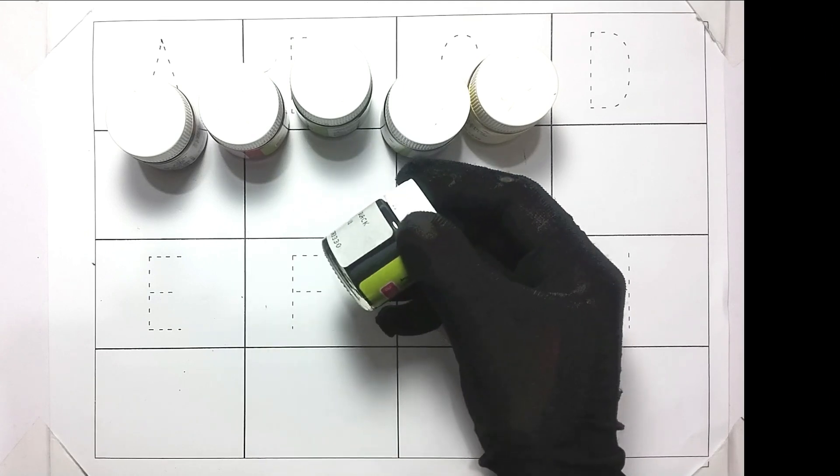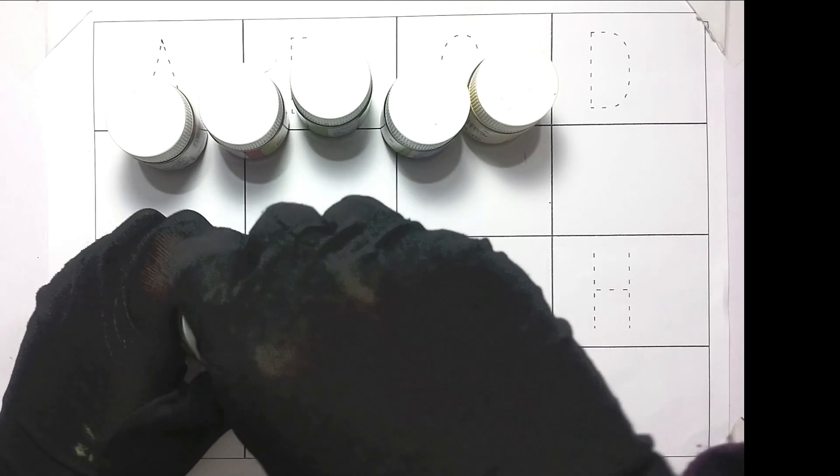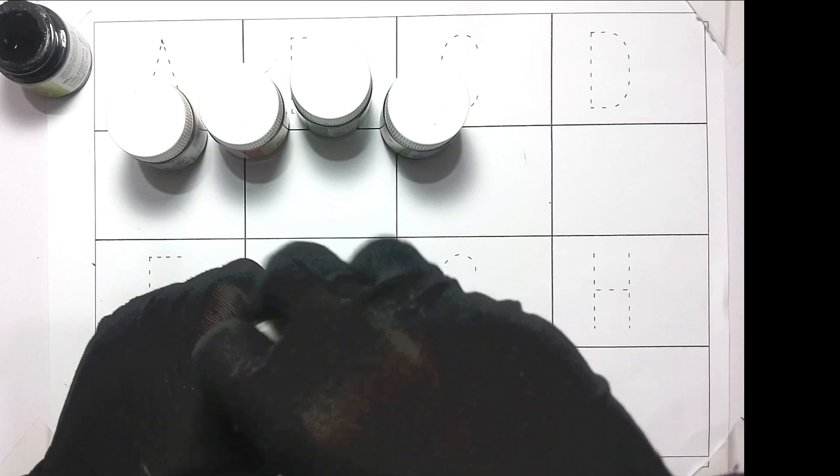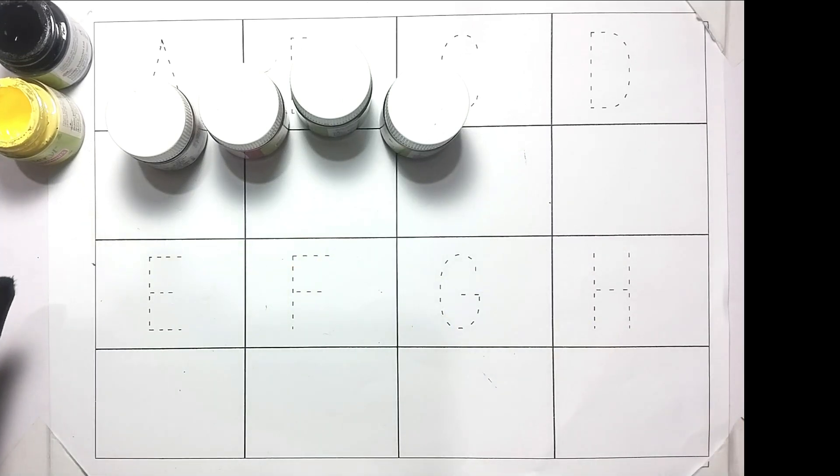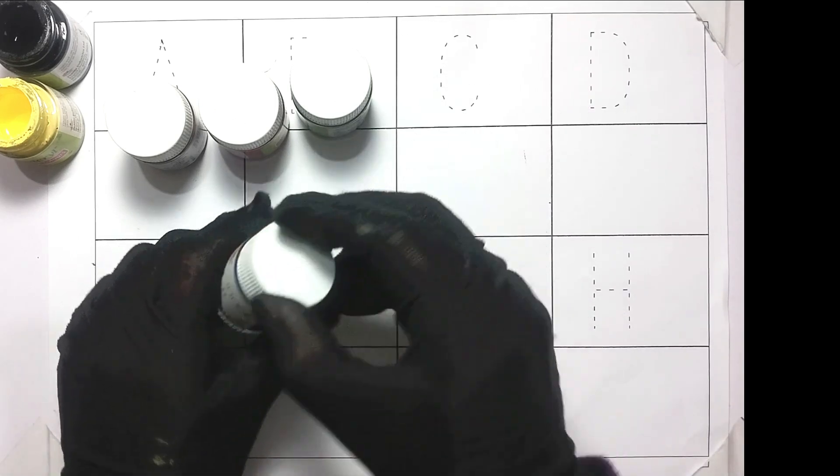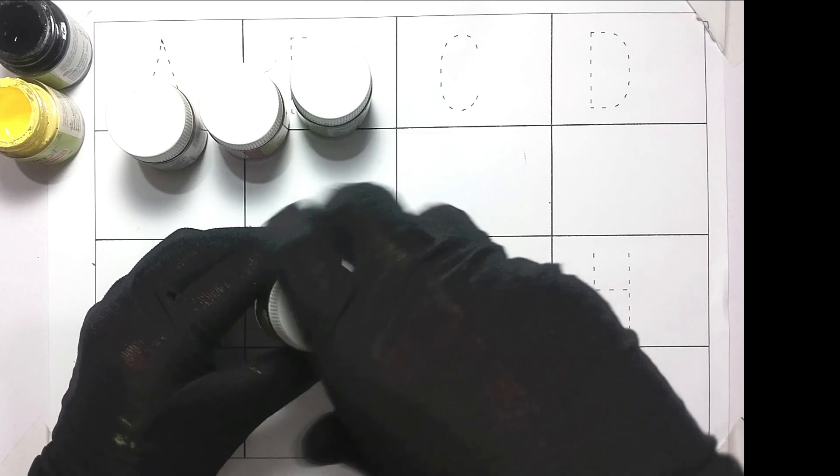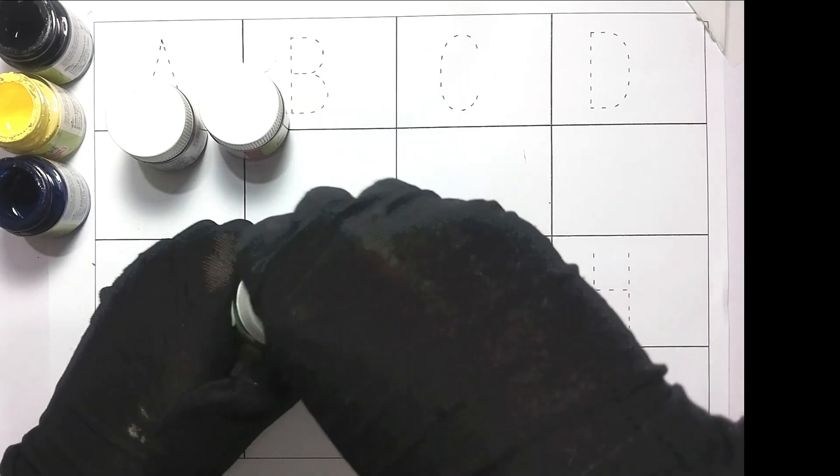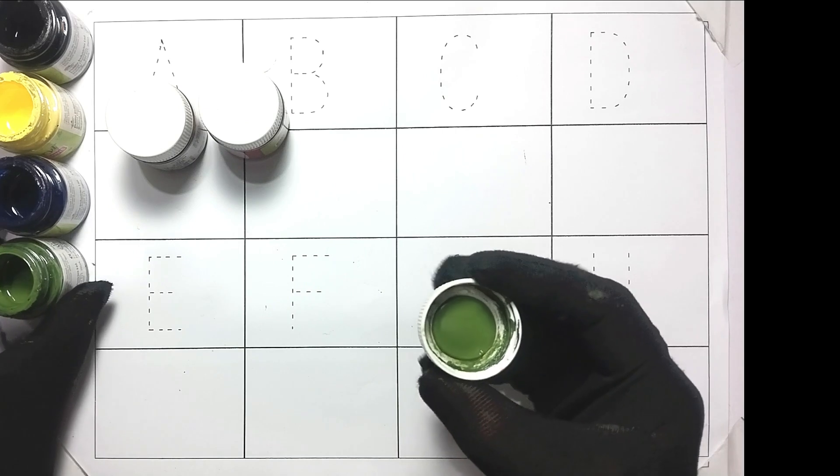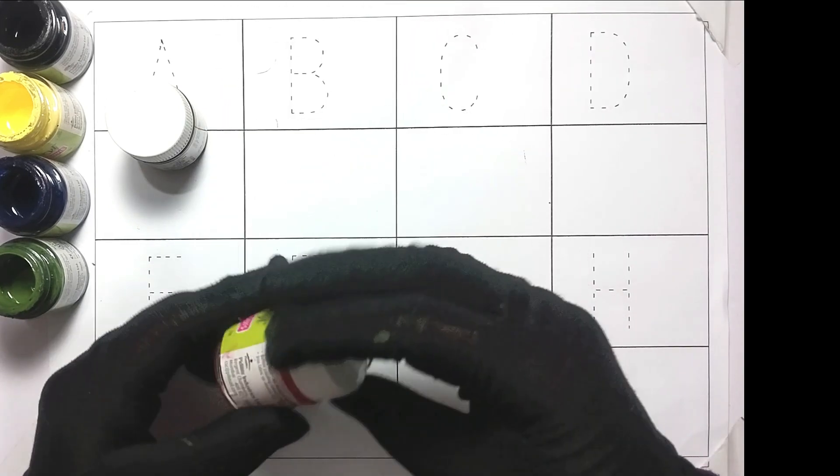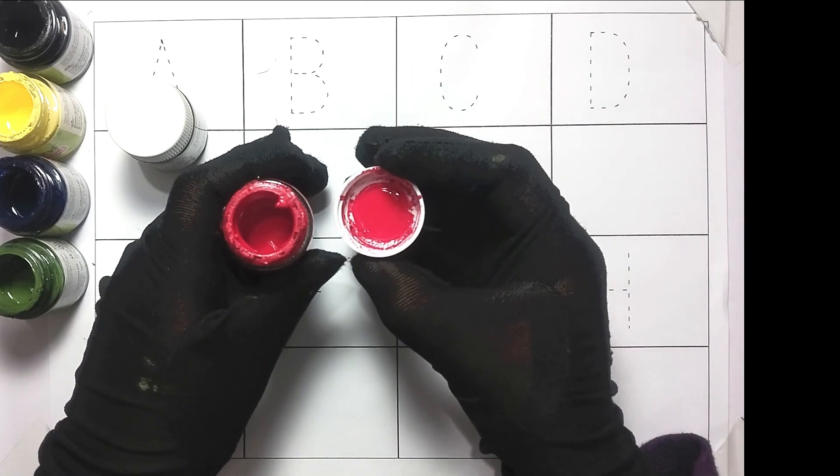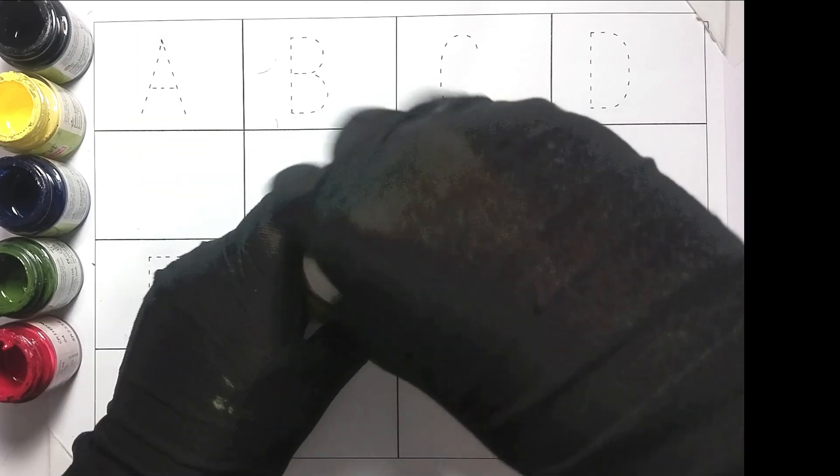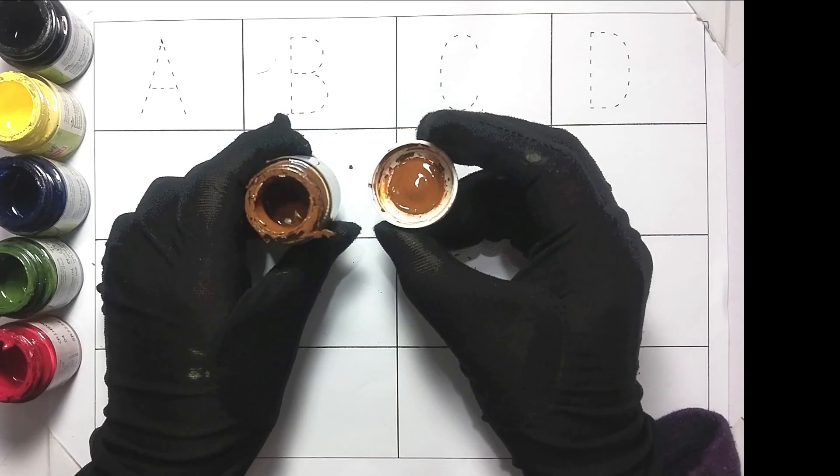This is black color. This is yellow color. This is blue color. Green color. Red color. And this is brown color.